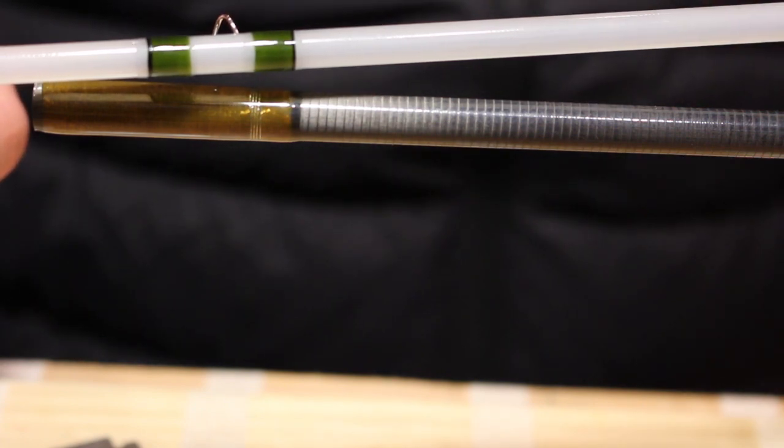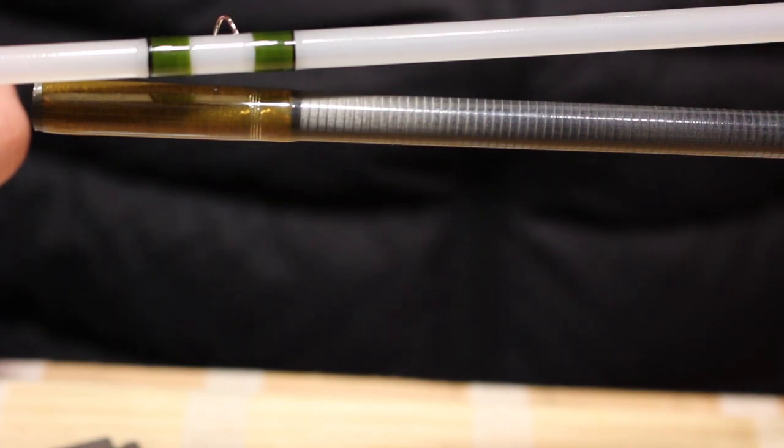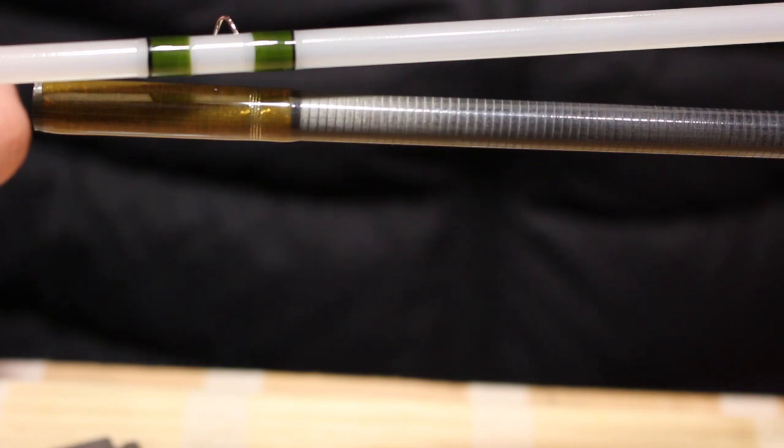In a minute, we're going to switch over and I'm going to actually do a few wraps with silk and show you some different characteristics of it, how it's similar and how it requires a little bit different handling than nylon. So we'll switch over to that now and we'll get started.